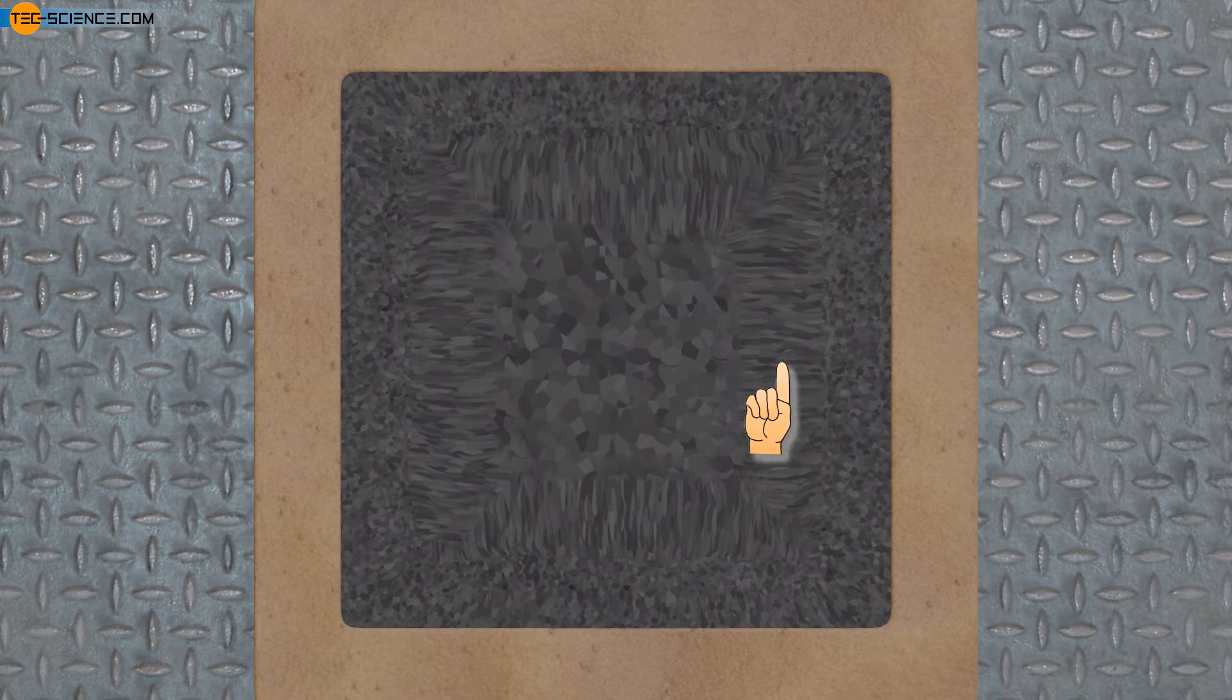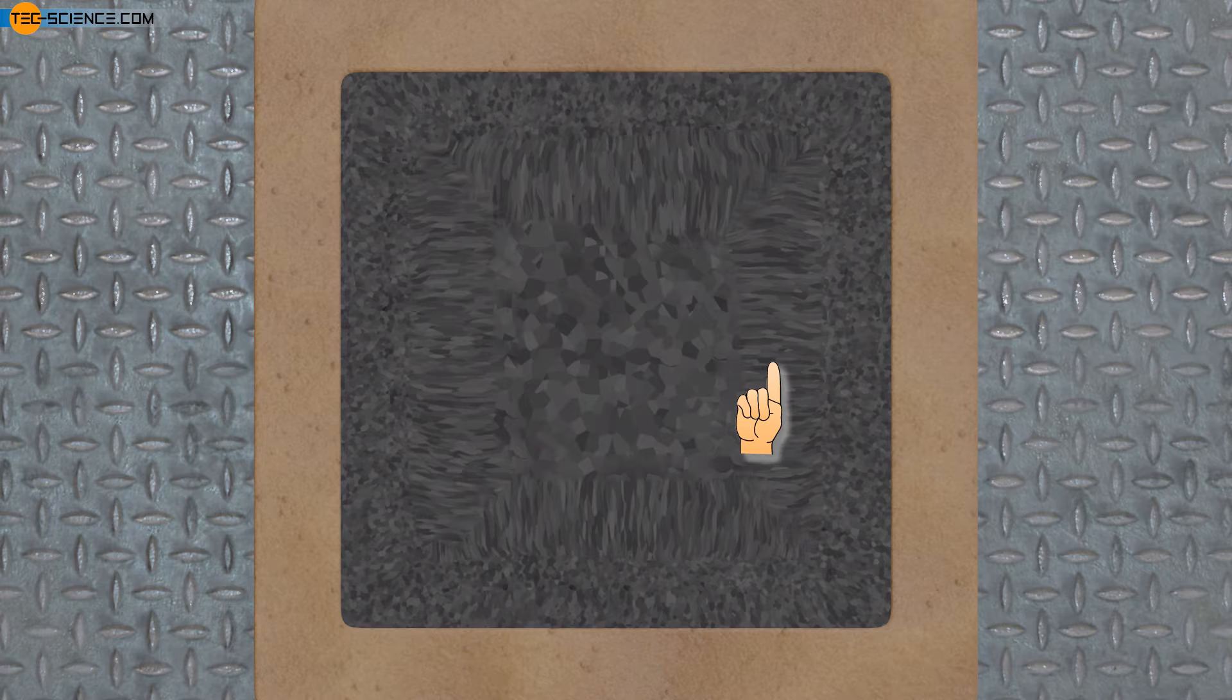After that, a zone with elongated grains is formed due to the heat dissipation strongly directed towards the vessel wall. This zone is also referred to as the transcrystallin zone.